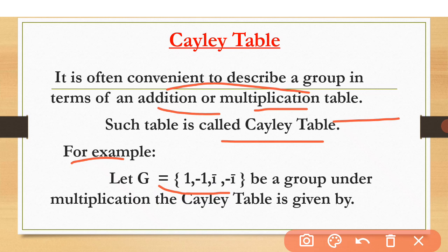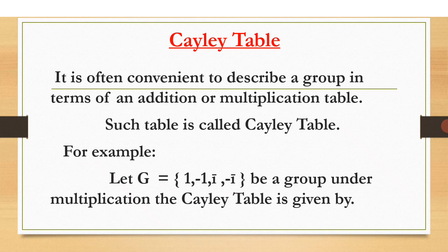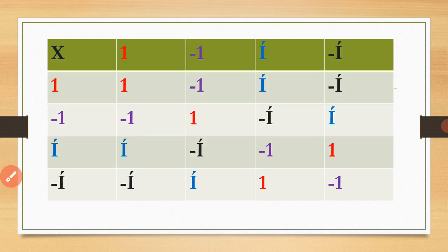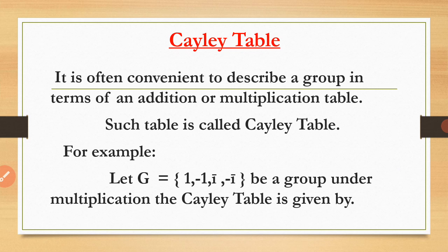The group G = {1, -1, i, -i} — we have discussed this group in previous lectures as well. In the Cayley table we discuss the closure law: whether the set is closed or not. Every element when multiplied with other elements and itself — we check whether those answers belong to the group or not.